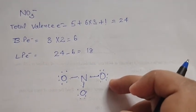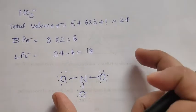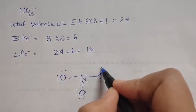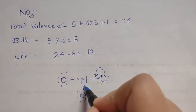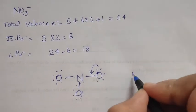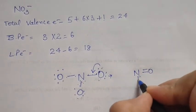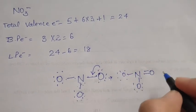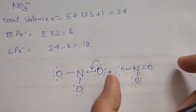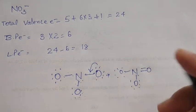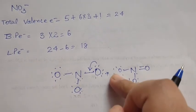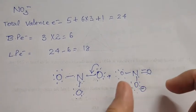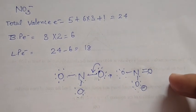Now there is one problem: nitrogen must maintain its maximum covalency of five, but currently it only has three bonds. So nitrogen will ask one oxygen to share its lone pair, forming a double bond. That lone pair shifts towards nitrogen, creating a double bond on one side. The structure now shows nitrogen with one double bond and two single bonds to the oxygens. The negative charge goes on one of the singly-bonded oxygens — not on the doubly-bonded oxygen, which has formal charge zero. This is how you write the Lewis structure of NO₃⁻.